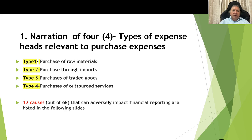Narration of 4 types of purchase expenses: Type 1 is purchase of raw materials, Type 2 is purchase through imports, Type 3 is purchase of traded goods, and Type 4 is purchase of outsourced services. There are 17 causes out of 68 that can adversely impact financial reporting, and these are registered here with purchase expenses.